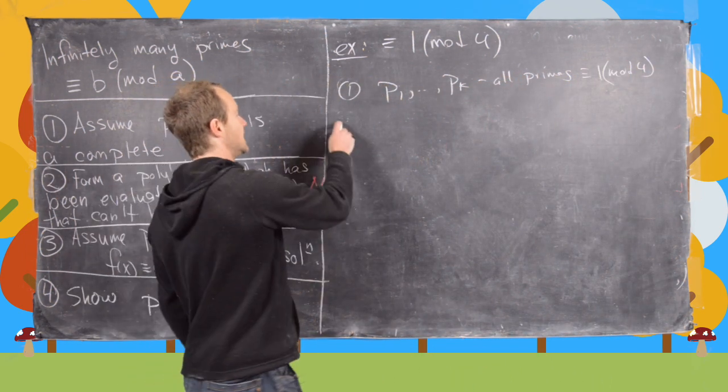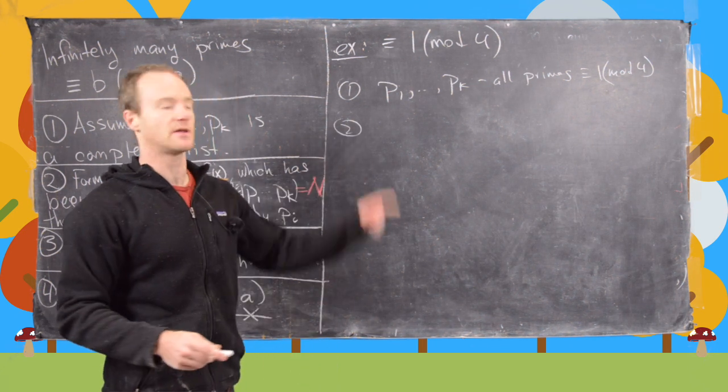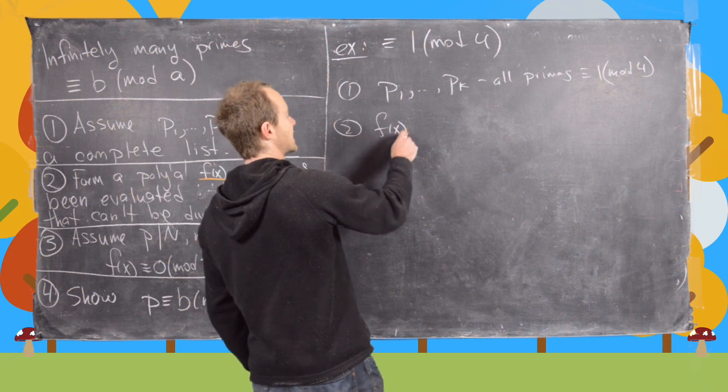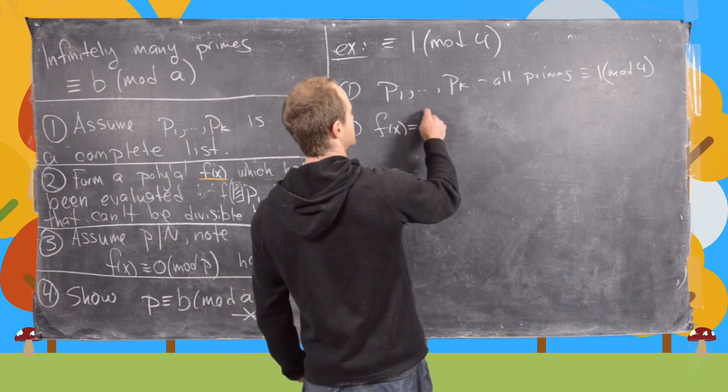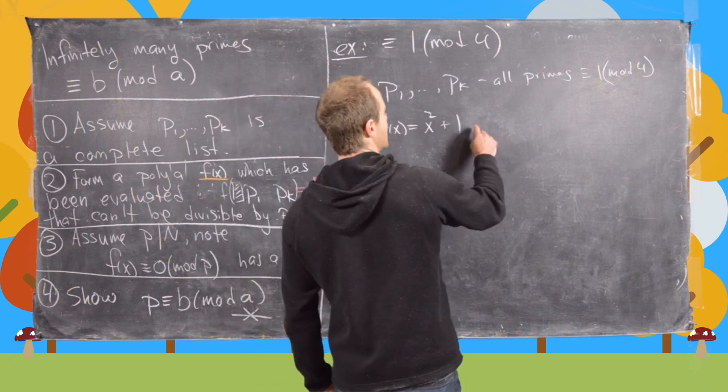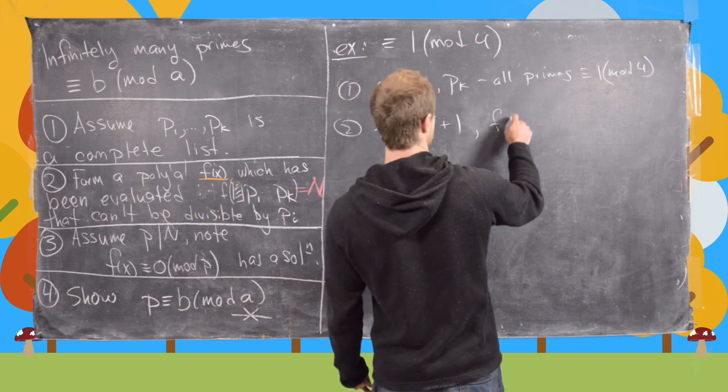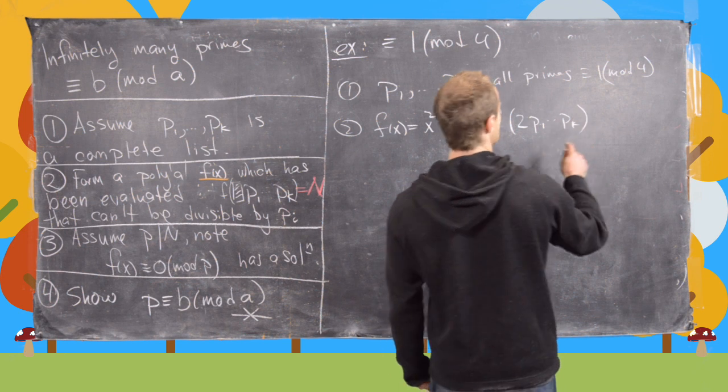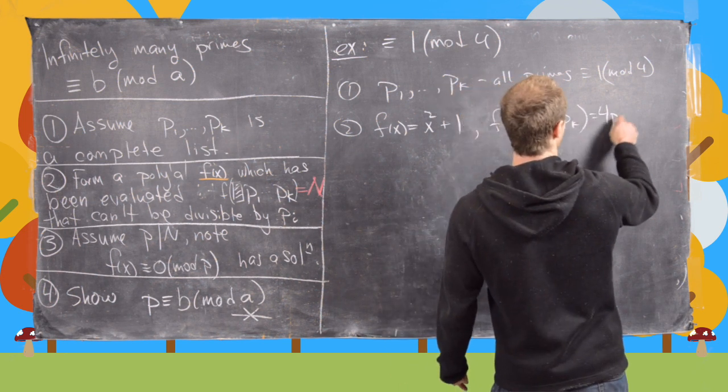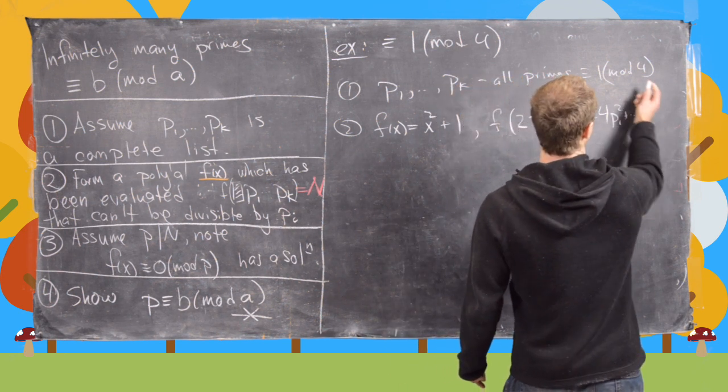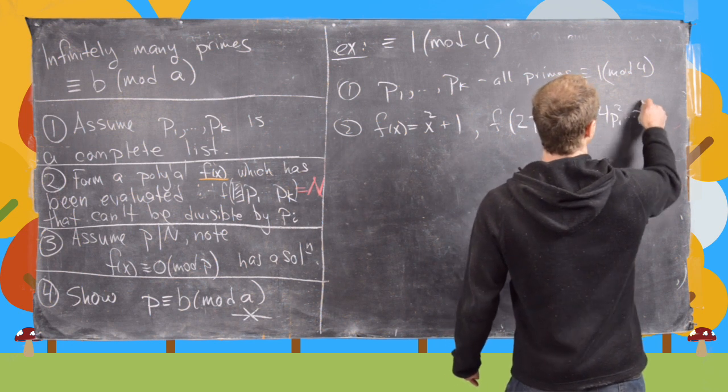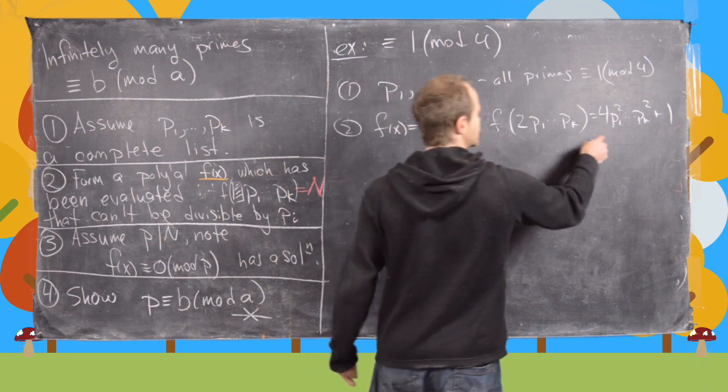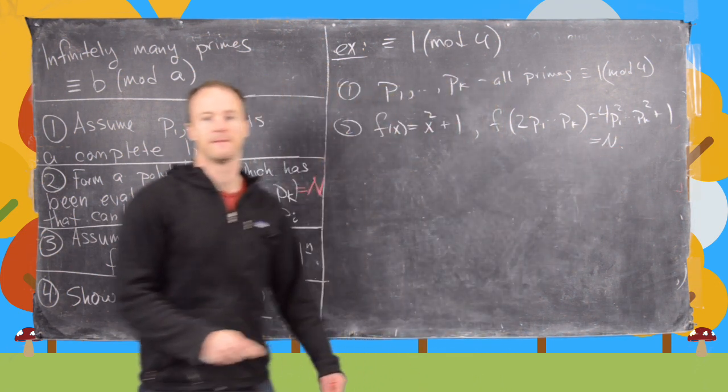And then the next thing that we're going to do is pick a polynomial that is evaluated at something like that so we'll take f of x to be x squared plus 1 and then we'll evaluate f of 2 times this product p1 to pk and notice that gives us 4 p1 squared up to pk squared plus 1. Now let's say that's equal to n.